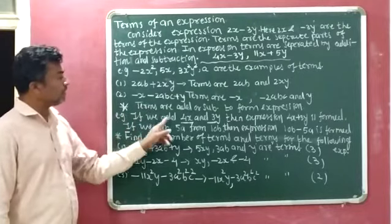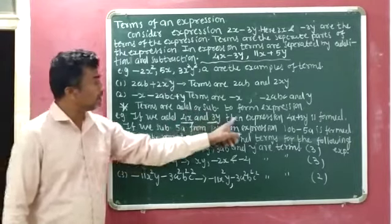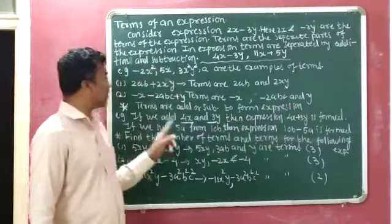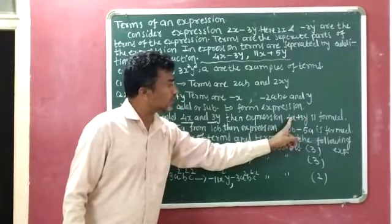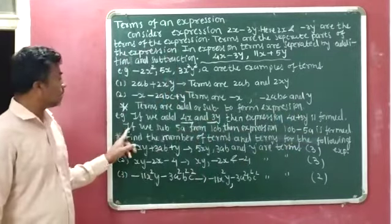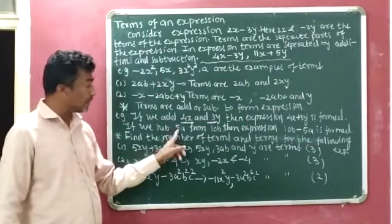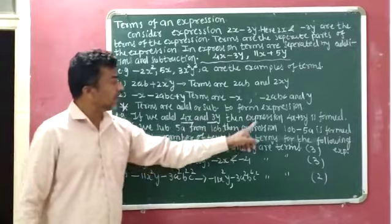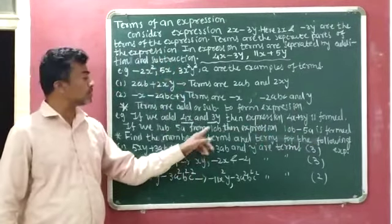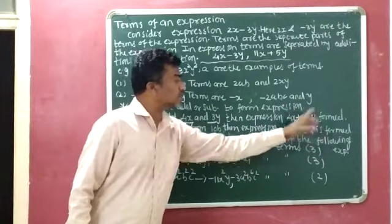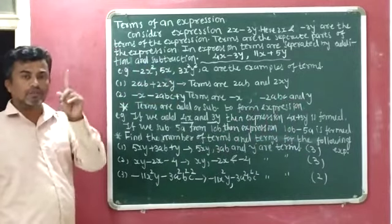For example, if we add 4x and 3y, then the expression 4x plus 3y is formed. Now if we subtract 5a from 10b, then the expression 10b minus 5a is formed, because 5a is subtracted from 10b.